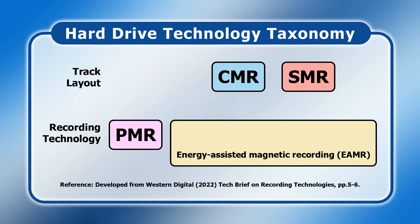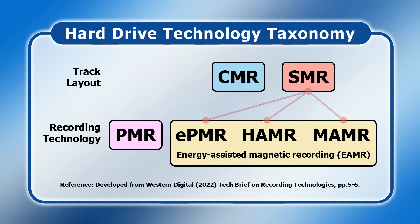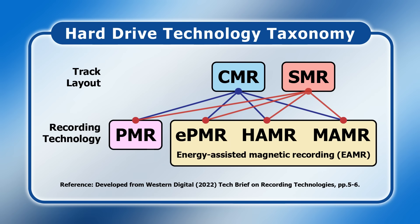The technology currently used in high capacity drives from Western Digital is known as EPMR, while Seagate uses HAMR and Toshiba currently employs MAMR. It's important to note that, just as with conventional PMR, all three of these technologies can be combined with either CMR or SMR. And despite what some generative AI systems may claim, EPMR, HAMR and MAMR are not alternatives to SMR. Rather, there are now eight types of hard drive: PMR, EPMR, HAMR and MAMR, each with CMR and SMR variants.